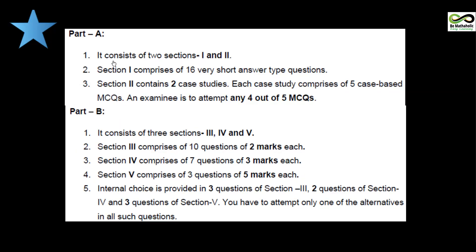Part A consists of two sections. Section 1 comprises 16 very short answer type questions. Please take care — very short answer type means you have to write the answer and explain how you found it, because split marking is there. The marking scheme has been released by the board along with the question paper. If even half the answer is correct, you will be awarded half marks.